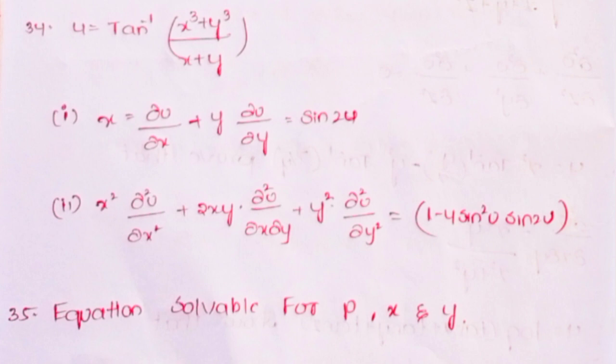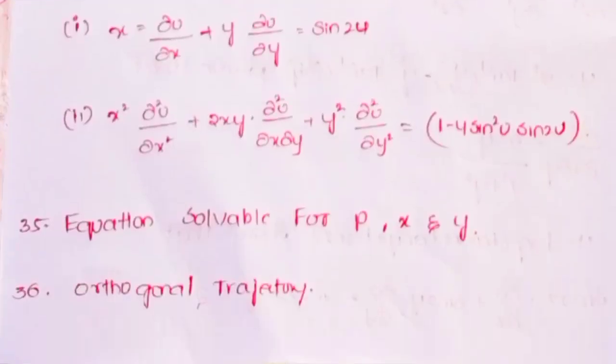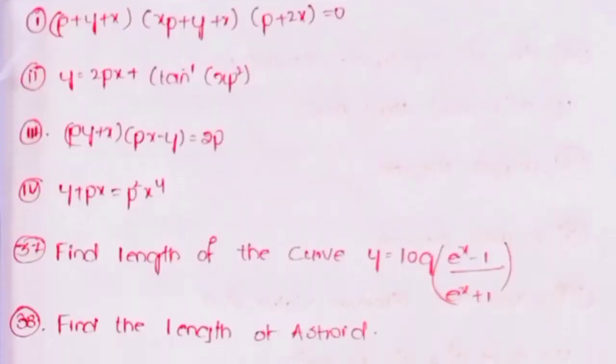Thirty-fifth, equations solvable for p, equations solvable for x, equations solvable for y. Thirty-sixth, orthogonal trajectory problems: (i) (p + y + x)(xp + y + x)(p + 2x) = 0; (ii) y = 2px + tan⁻¹(xp²); (iii) py + x(px − y) = 2p; (iv) y + px = p²x⁴.